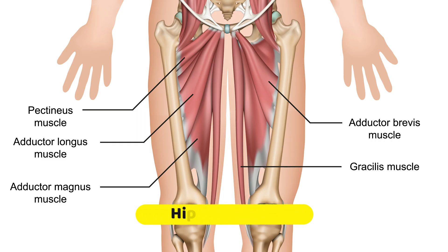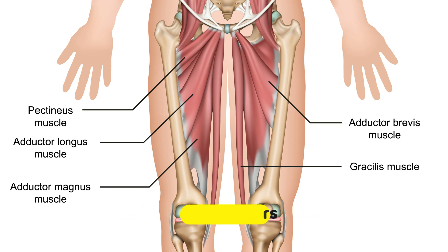We are now going to look at the adductor muscles of the thigh. That's A-D, beginning, and 'ad' means towards in Latin. So these are muscles that pull towards.